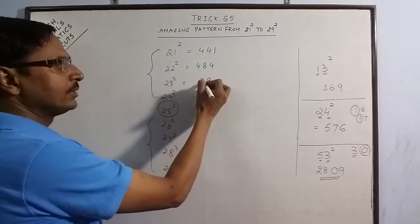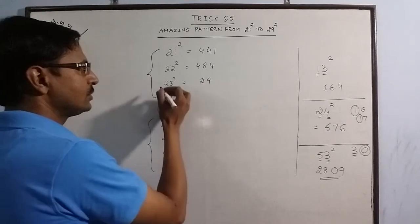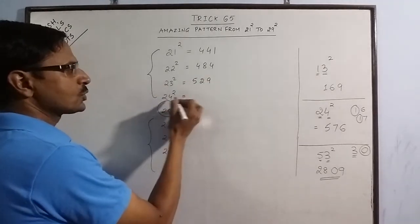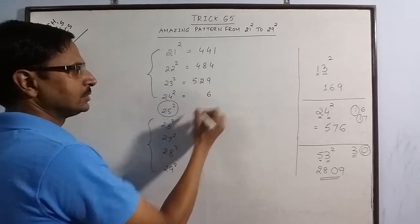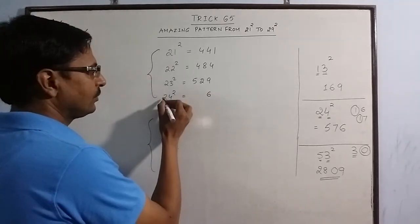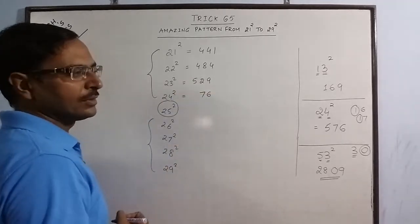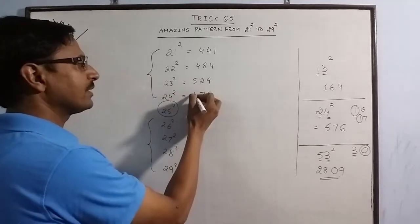2 square is 4 plus 1 is 5. 4 square is 16. 1 carry 4 times 2 is 8 double 16 plus 1 is 17. 1 carry 2 square is 4 plus 1 is 5.